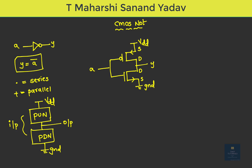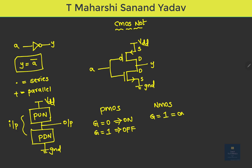This is the schematic of the CMOS NOT gate. To analyze the ON and OFF conditions: for PMOS, if you apply 0 at the gate terminal it will be ON, and if you apply 1 it will be OFF. For NMOS, if you apply 1 at the gate terminal it will be ON, and if you apply 0 it will be OFF.